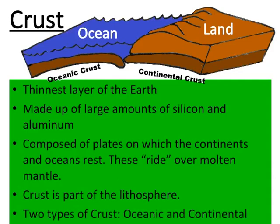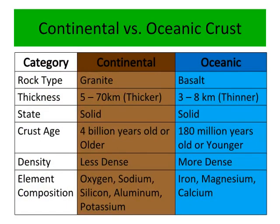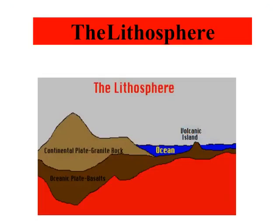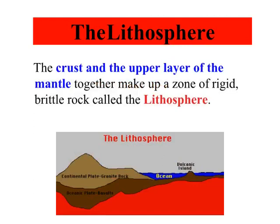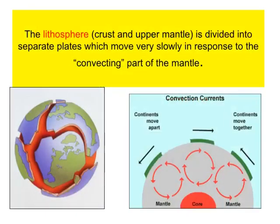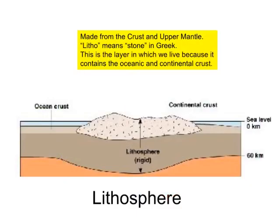The crust is part of the lithosphere. There are two types of crust: oceanic and continental. The crust and the upper layer of the mantle together make up a zone of rigid, brittle rock called the lithosphere. The lithosphere — crust and upper mantle — is divided into separate plates which move very slowly in response to the convecting part of the mantle. Litho means stone in Greek. This is the layer in which we live because it contains the oceanic and continental crust.